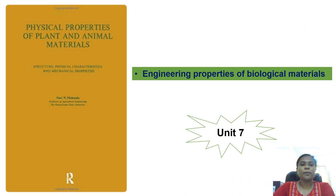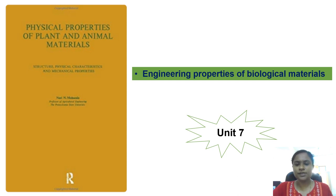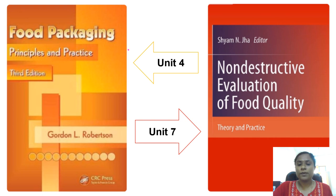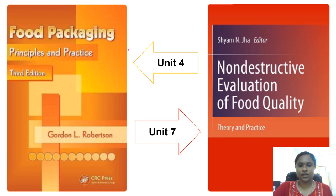To cover Unit 7 on engineering properties of biological materials, you can refer to 'Physical Properties of Plant and Animal Materials' by Mohsenin. In my personal experience, this book is really good. For the packaging portion under Unit 4, refer to 'Food Packaging: Principles and Practices' by Robert Sacharow. Another important topic under Unit 7 is non-destructive techniques like image processing, X-ray, and MRI. For this, refer to 'Non-Destructive Evaluation of Food Quality: Theory and Practice' by Zude.